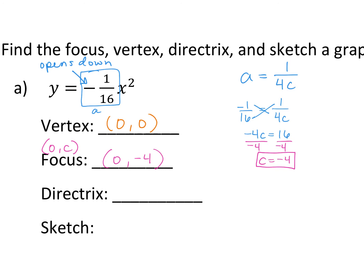Then remember your directrix is always y equals a negative C value. So your directrix is a line — don't ever just give me a number. You need to give me a line. So it's going to be y equals positive 4, the opposite of negative 4. That's how you find all the pieces.